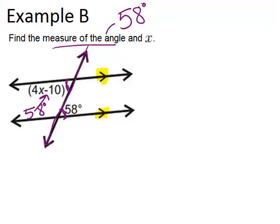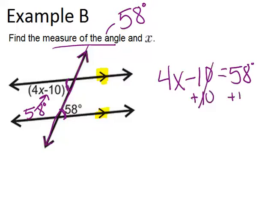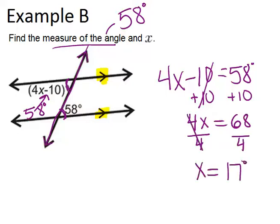Now in order to find x, we can just solve this equation. 4x minus 10, which is the expression for the angle, has to equal 58 degrees. We can solve this using normal algebra skills. Add 10 to both sides, and you get 4x equals 68 degrees. Then we can divide by 4, and we get our answer that x equals 17 degrees.